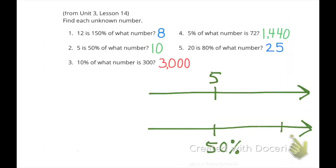Number two. Five is fifty percent of what number? Well, if we double fifty percent, we get one hundred percent. So double the five and you get ten. Five is fifty percent of ten.